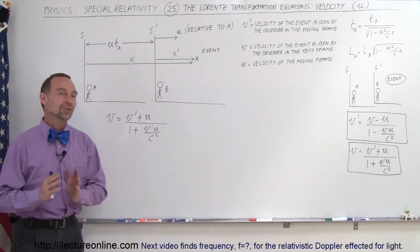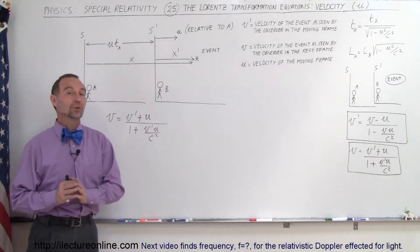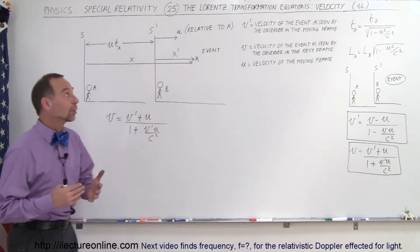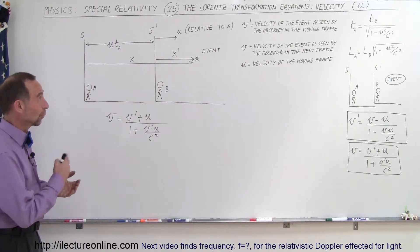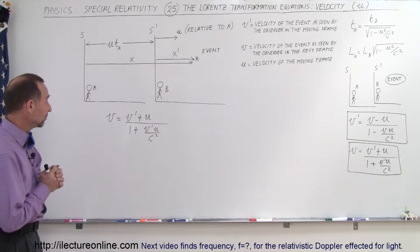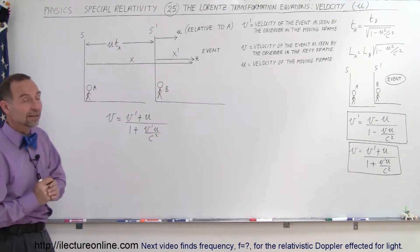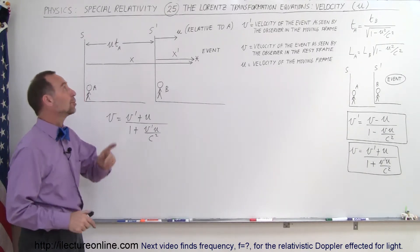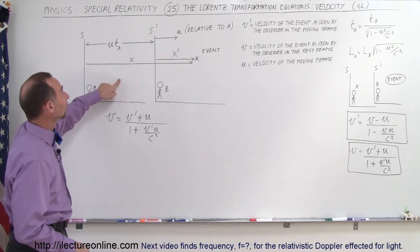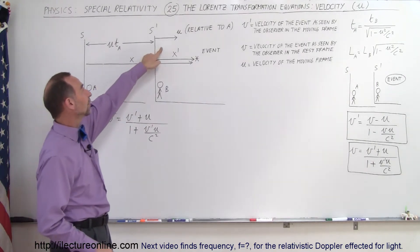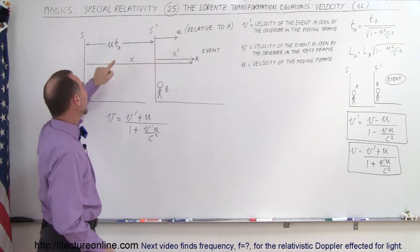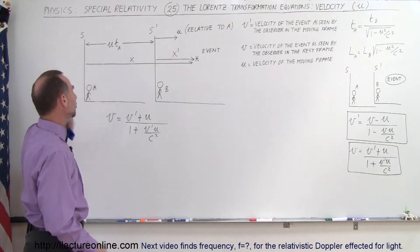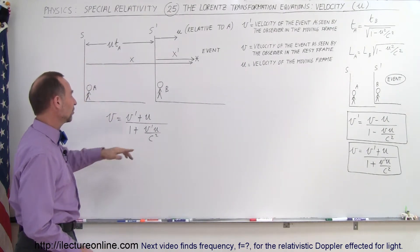Welcome to iLectureOnline. We're going to do our third Lorentz transformation equation for velocity, and we're going to solve for u. Remember, u was the velocity of the moving reference frame in reference to the stationary reference frame.